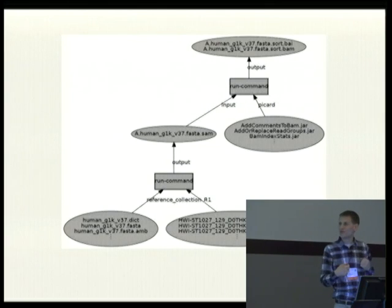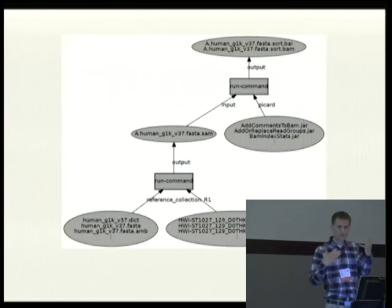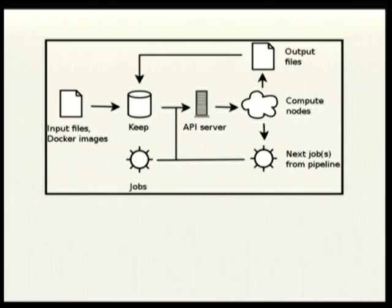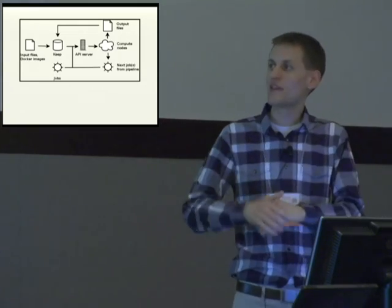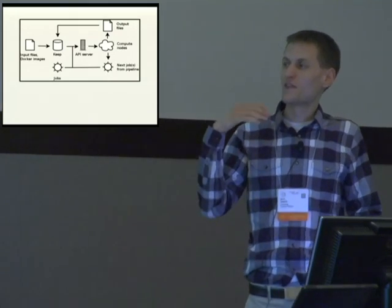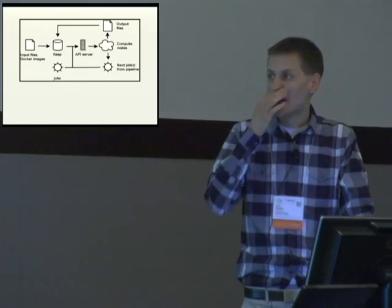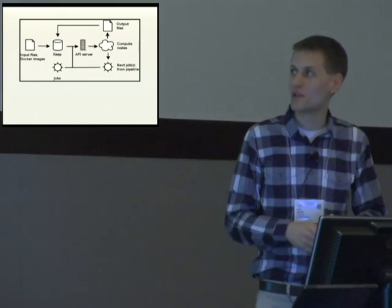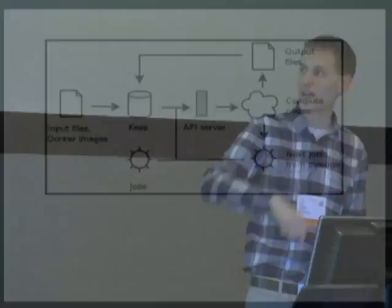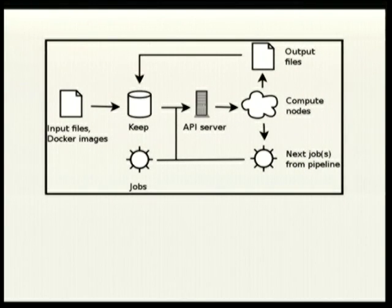Let me recap with a high-level overview of the entire architecture. You start with your input files, put them into the Keep storage system, and the Keep manifests go into the API server. You send jobs to the API server for computation on those inputs. The API server farms those off to compute nodes; as jobs run, they generate output files that go back into Keep. Once they finish, you may have more jobs to run, those get instantiated on the API server, and we continue that loop through the entire analysis, capturing everything needed for reproducibility and provenance.